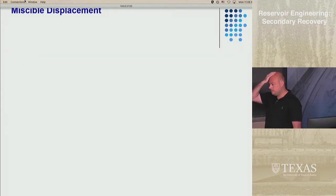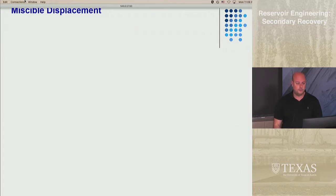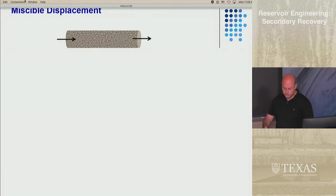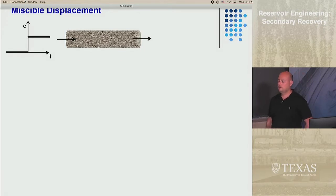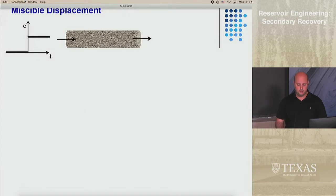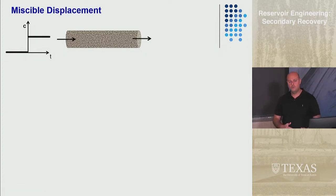For now we're going to talk about a miscible displacement process, where you have a component and it dissolves in another fluid. We'll just talk about one dimension. This is a 1D reservoir or 1D rock core. We might inject our component at the entrance. There are two ways to do that: you can dump it all in in a very short period of time, or you can have a step change — no tracer initially, then all of a sudden a constant injection. That value stays constant.